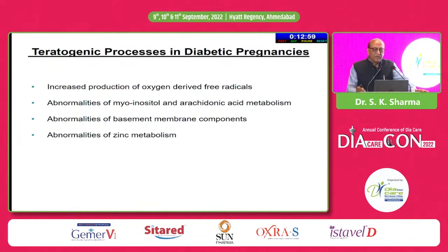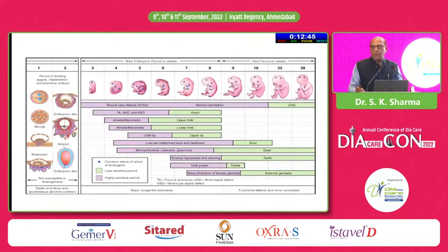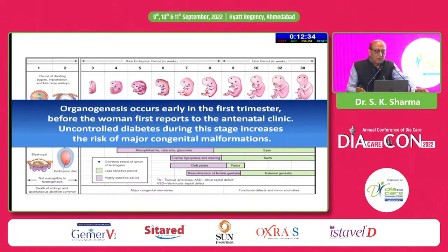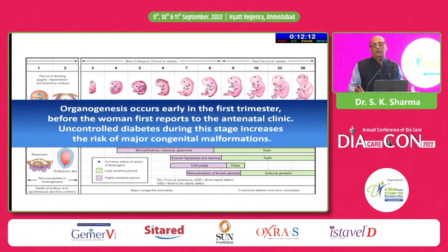There are teratogenic processes in diabetic pregnancies, including increased production of oxygen-derived free radicals, abnormalities of myoinositol and arachidonic acid metabolites, abnormalities in basement membrane components, and abnormal zinc metabolites. Organogenesis occurs early in the first trimester before the woman first reports to the antenatal clinic. So most of the time patients are coming very late, and by that time they may be having uncontrolled hyperglycemia.